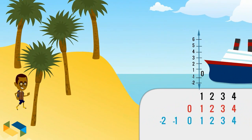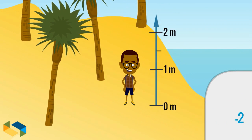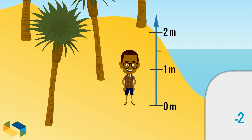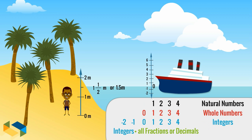Now let's try to find out how tall this boy on the beach is. His height is between one meter and two meters, shown as a fraction one and a half or a decimal one point five meters. A set of integers along with all numbers that can be denoted by a fraction or a decimal is called real numbers.